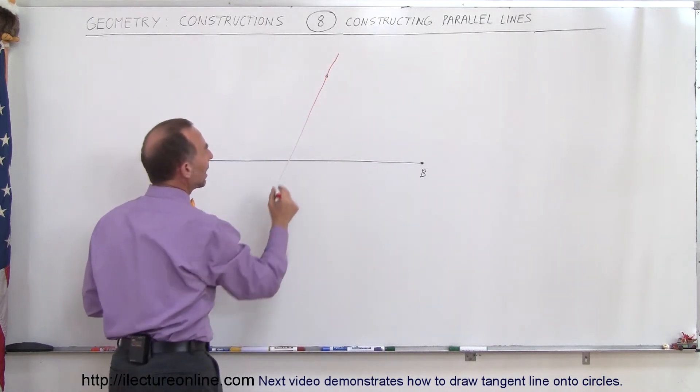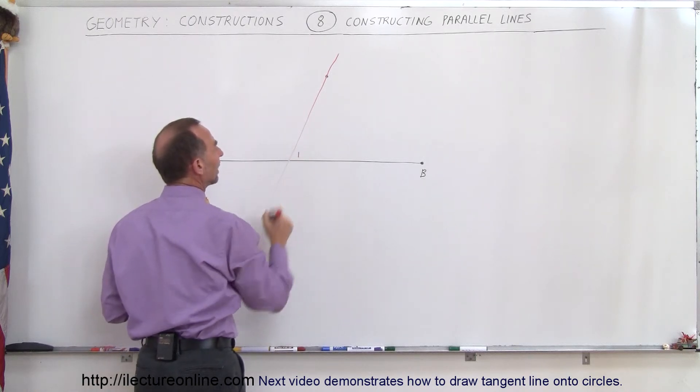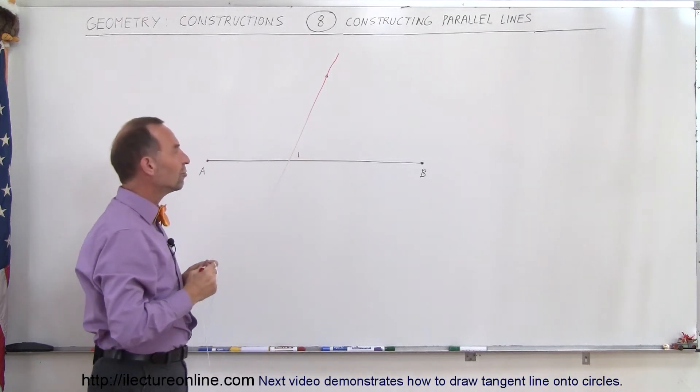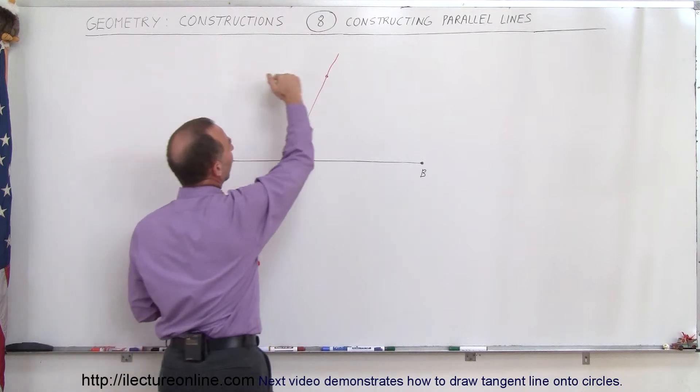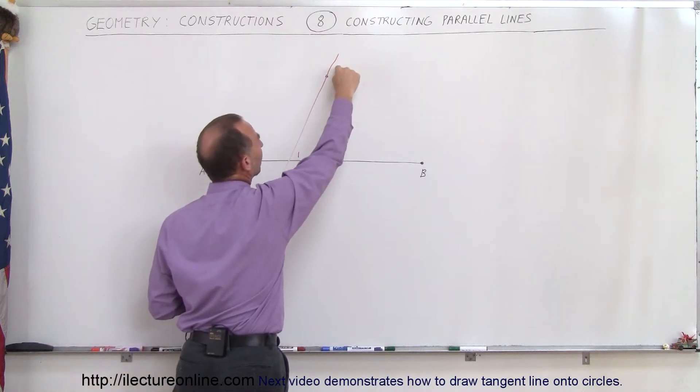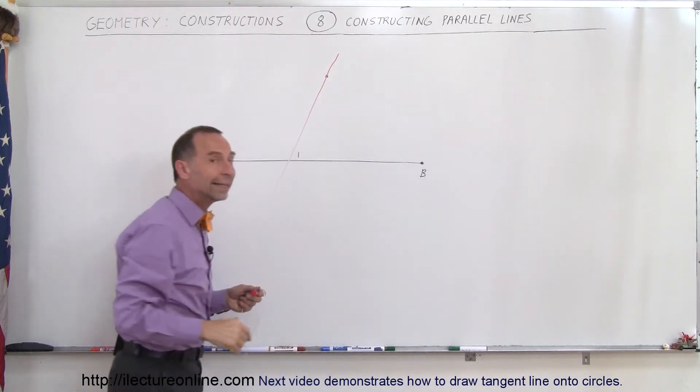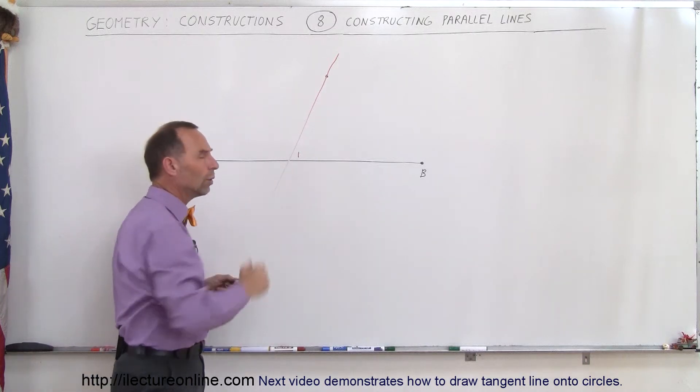Alright, which means that we have an angle right here, so let's call this angle 1. Which means that if we're going to draw a line this way, that will then form angle 2, and that angle has to be the same as angle 1.